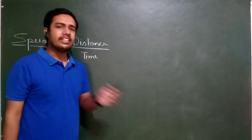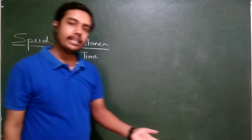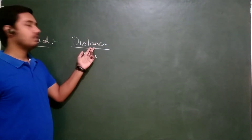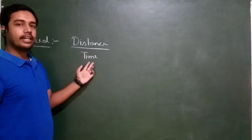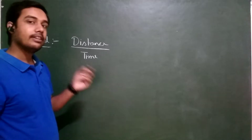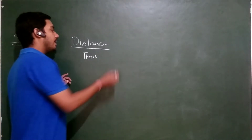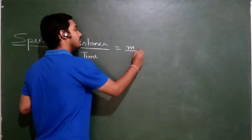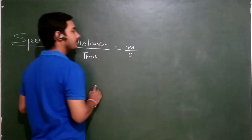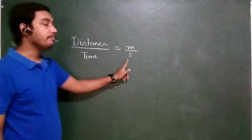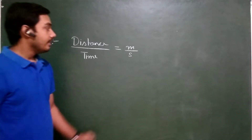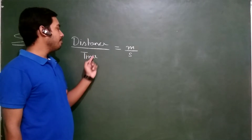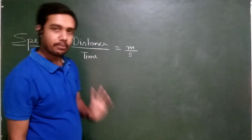For a simple example, if I am covering 10 metres in 2 seconds, the distance is 10 metres and the time is 2 seconds. So what will be my speed? 10 divided by 2, that is 5 metres per second.